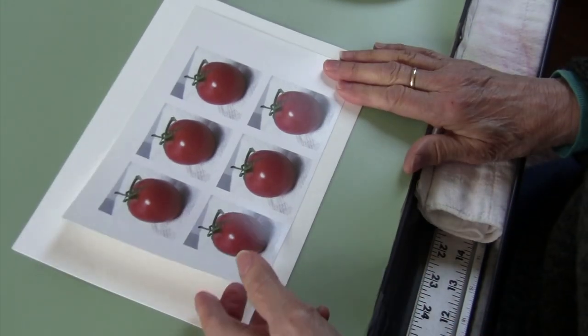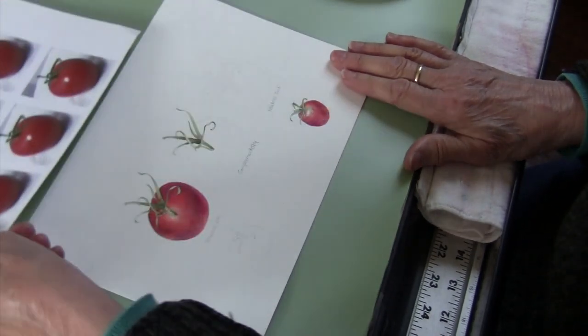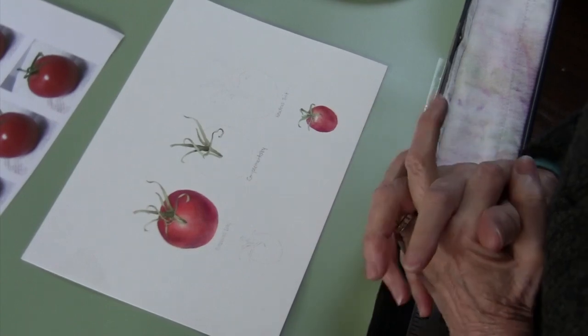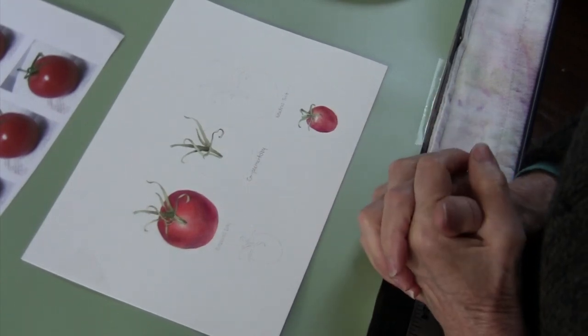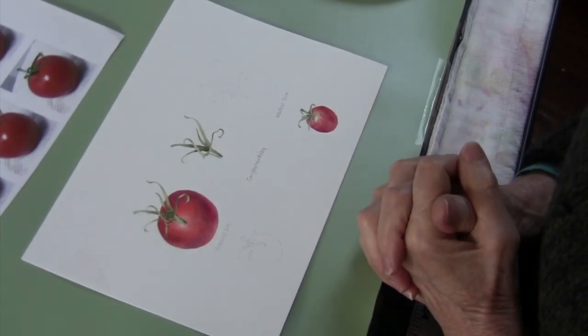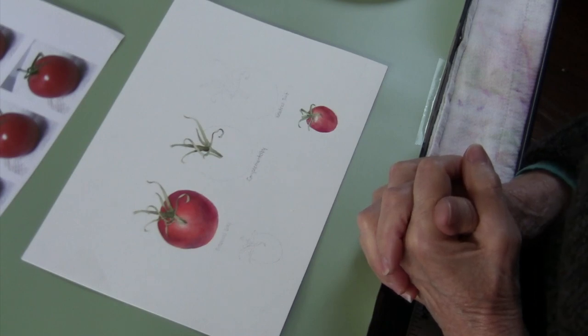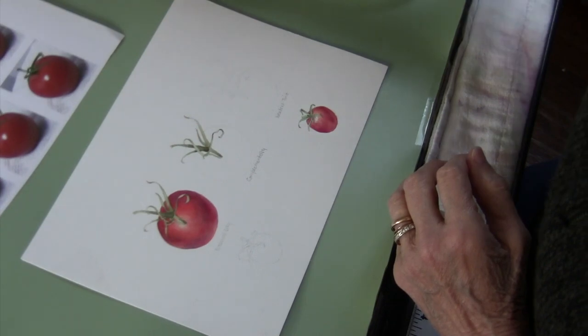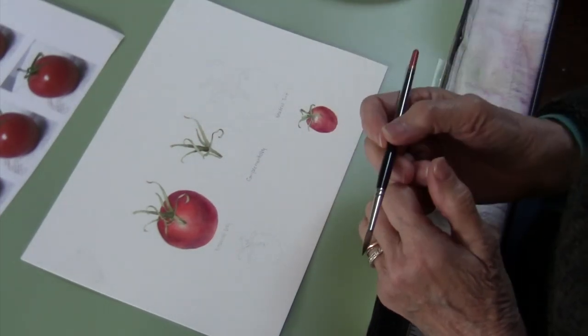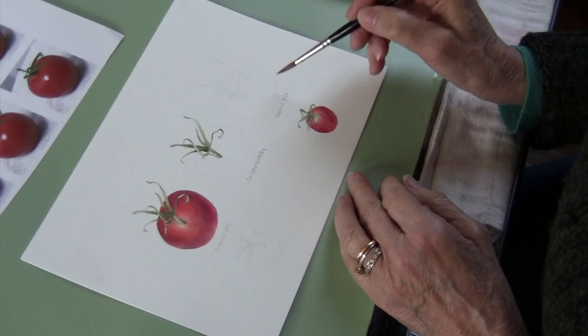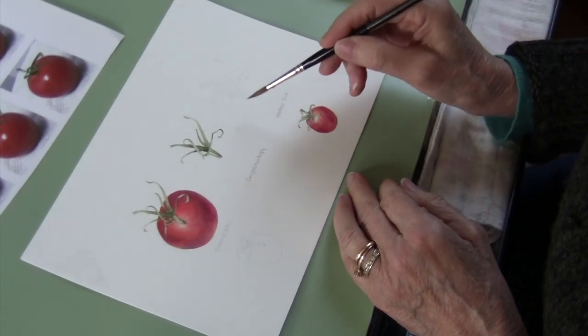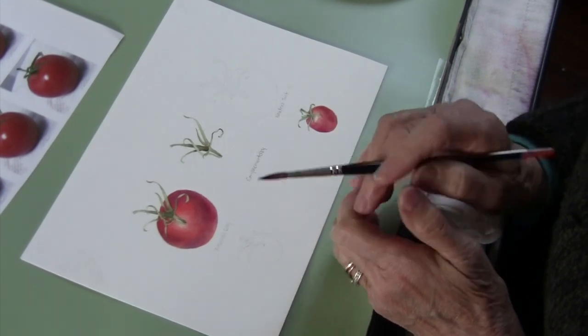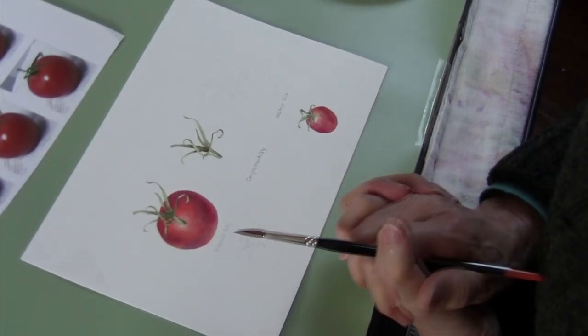So we're going to use this tomato as our subject, and as you can see here I have a slightly different tomato that I had started and done as a demonstration in a previous Watercolor One class. What I want you to do is paint this tomato three times, and you can see there is another drawing of this tomato besides the one that's already finished.